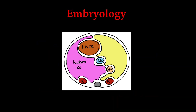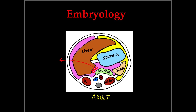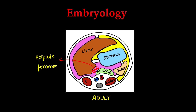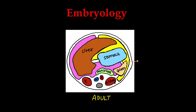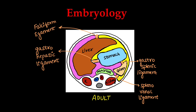The peritoneal space in pink is the lesser sac and the one in yellow is the greater sac. In the adult abdomen we can identify liver, stomach, spleen, pancreas, both kidneys, aorta and IVC. The space or passage between the liver and stomach is called the epiploic foramen or foramen of Winslow. Between stomach and pancreas is the lesser sac. Between stomach and spleen is the gastrosplenic ligament. Between spleen and kidney is the splenorenal ligament. Between liver and stomach is the gastro-hepatic ligament. Anterior to the liver, the falciform ligament connects to the abdominal wall.